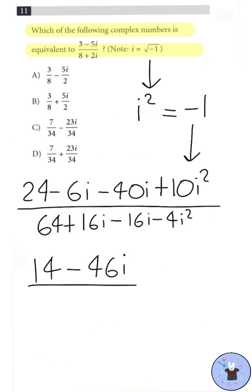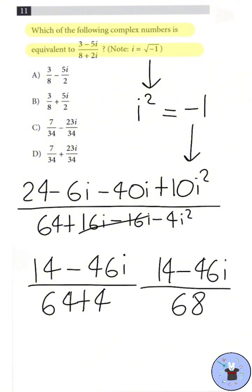Then, for the denominator, we get 64 plus 4 equals 68. And using the i squared equals negative 1 principle from before, we have 14 minus 46i divided by 68.